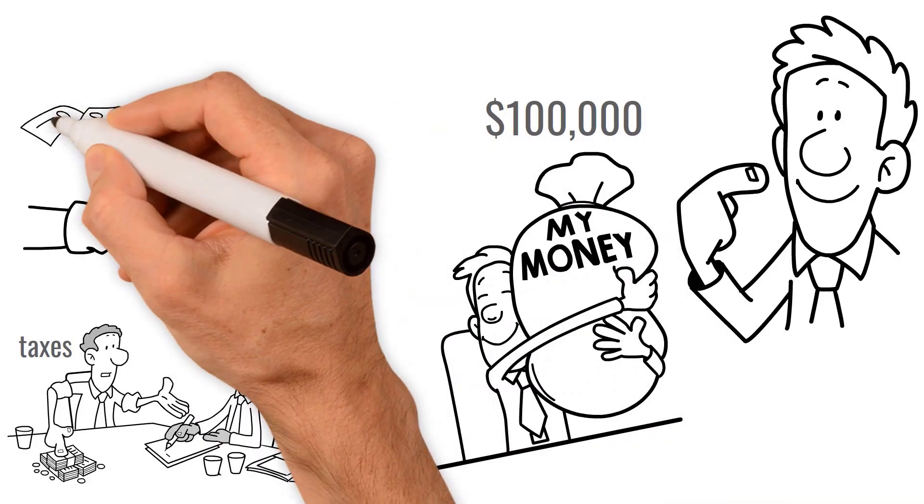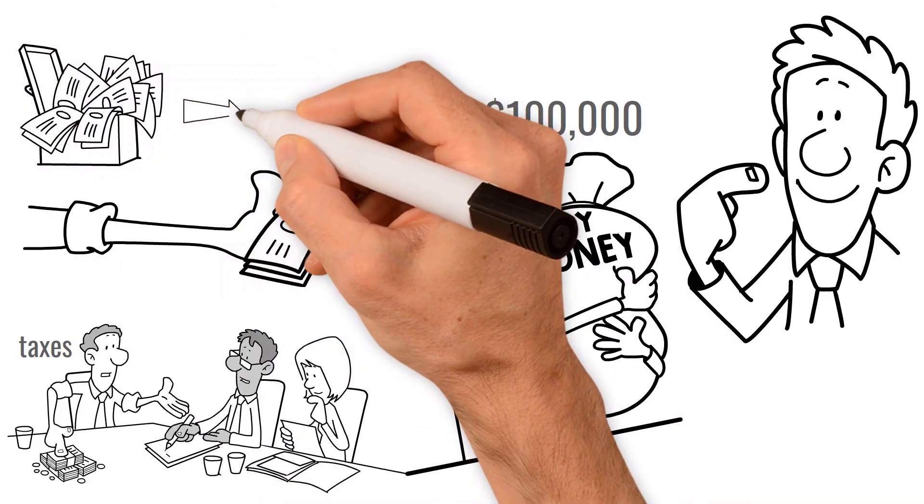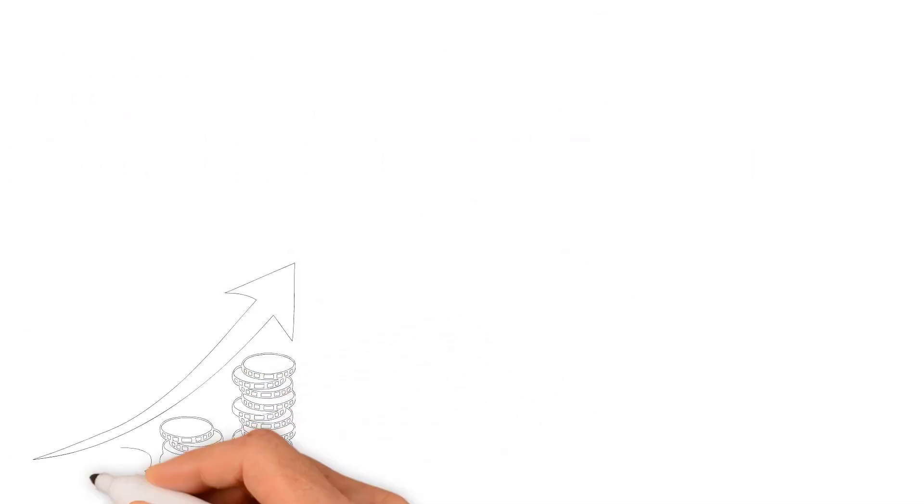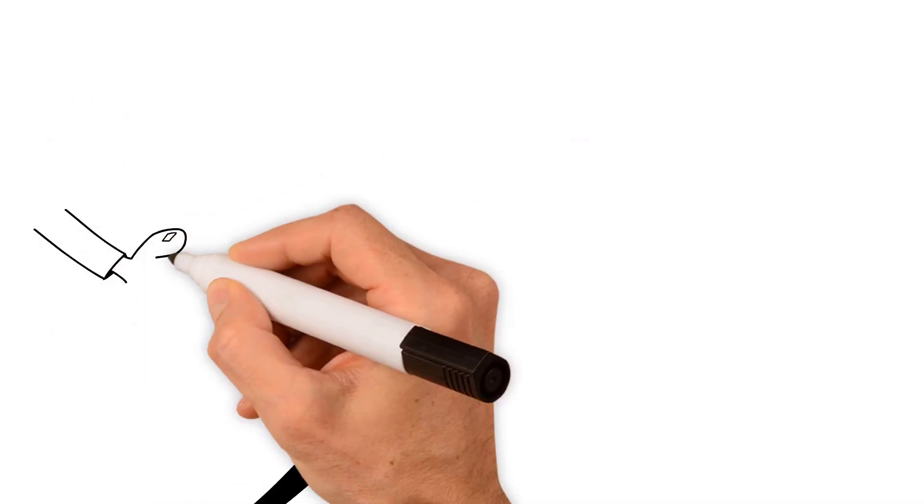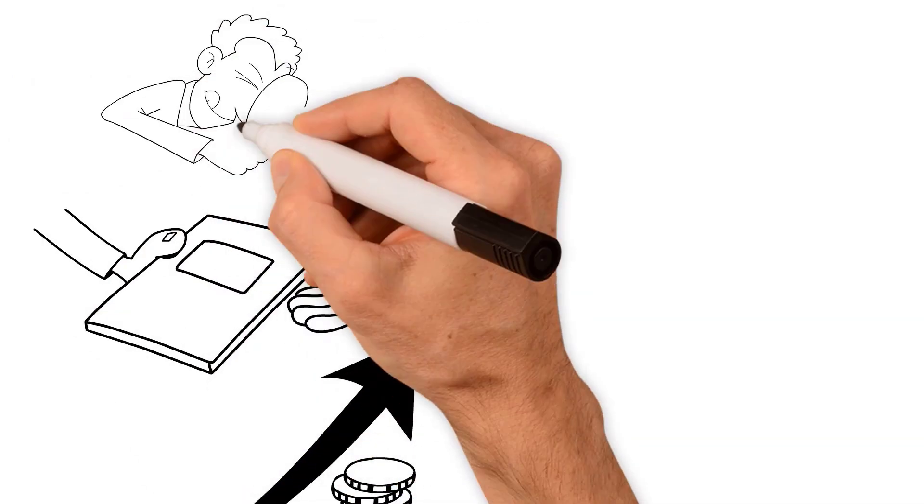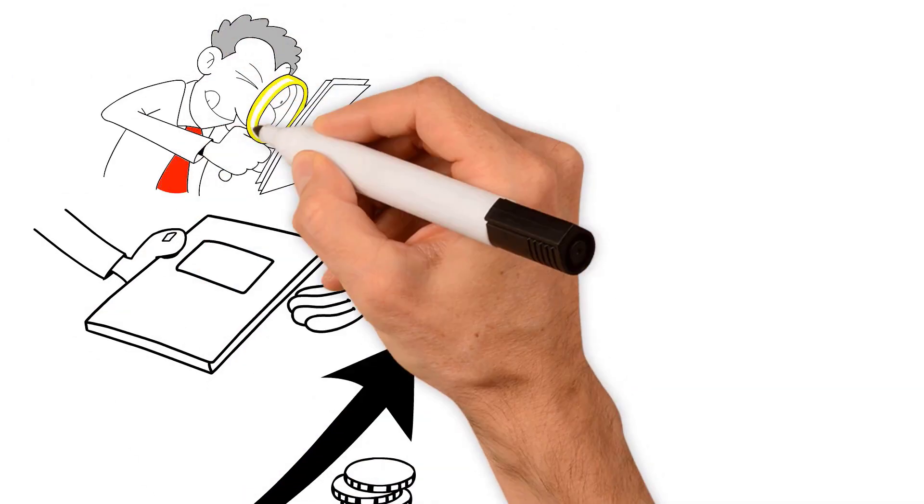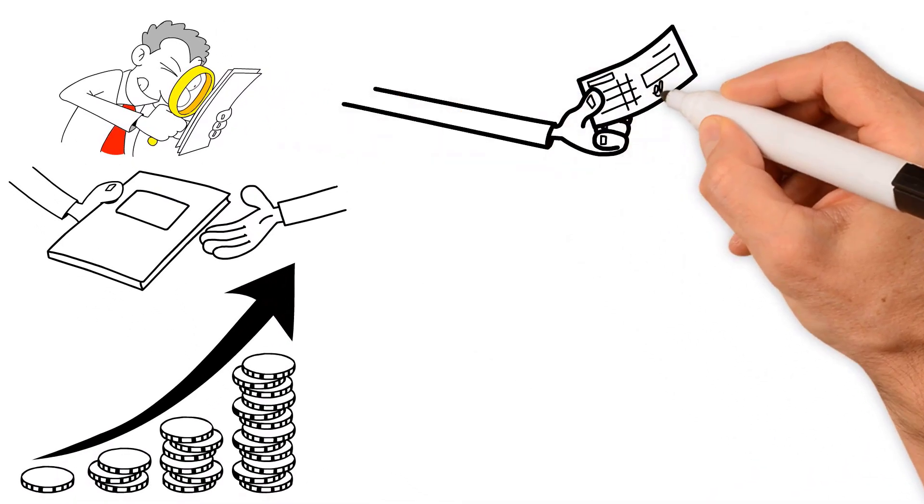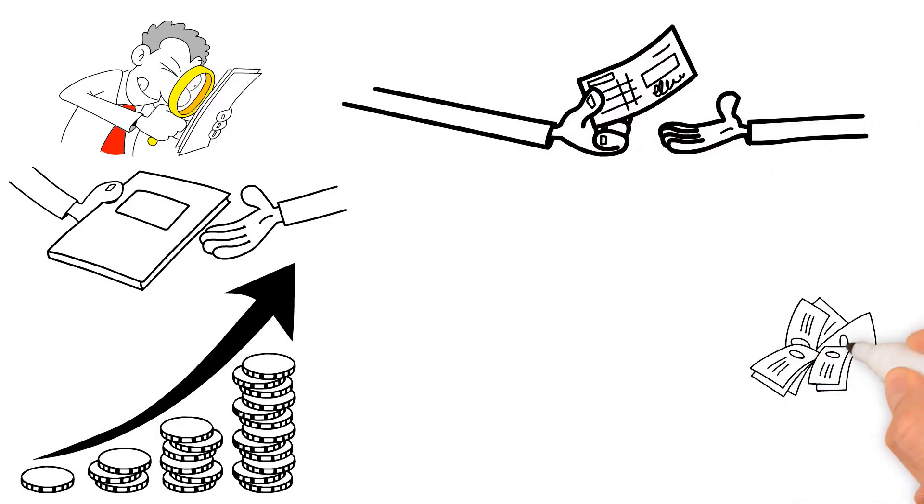Paycheck withholdings go into a bucket to pay the IRS come tax time. When tax season rolls around, Bob submits his paperwork to the IRS and they determine how much he owes in taxes. If his withholding bucket has more money than he owes, Bob gets a refund. But if his bucket isn't full enough, he owes more money to the IRS.